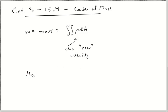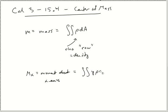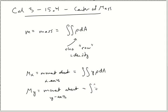We also have M sub x, the moment about the x-axis. That will be important for our math in a second. It's the double integral of y·ρ dA — we just throw a y in there. And for M sub y, the moment about the y-axis, you throw an x in there: x·ρ dA.